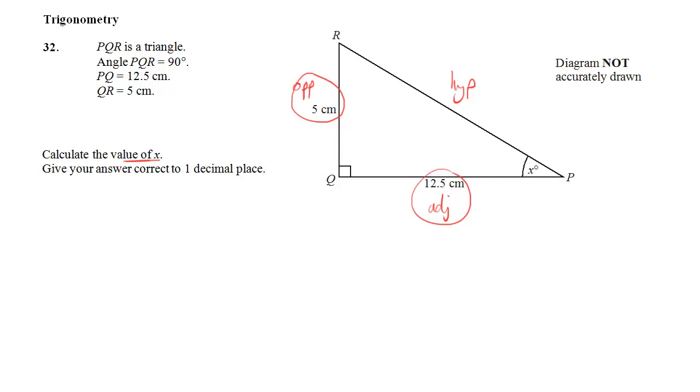Now, which trig ratio involves opposite and adjacent? Whichever way you remember it, make sure you learn it. It's tan. So tan theta is opposite over adjacent, that's the definition.